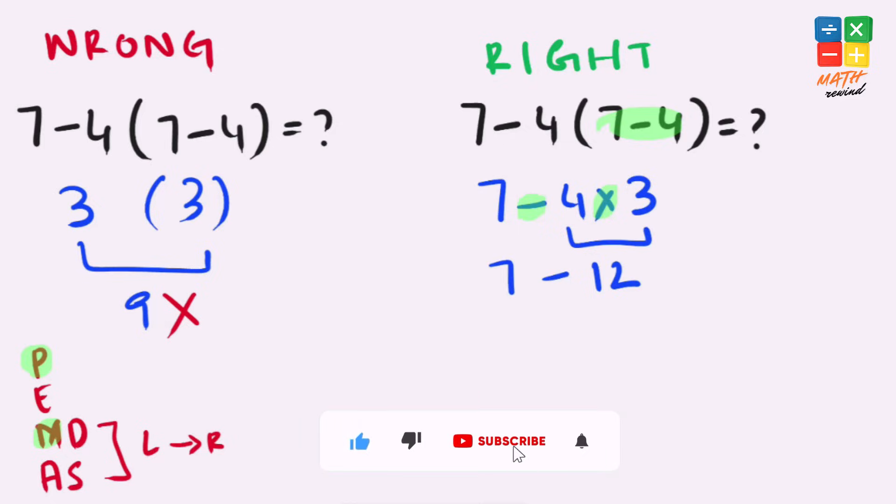Our equation further simplifies to 7 minus 12. And when we simplify this, our answer comes down to minus 5. Which, according to the order of operations, is the right answer.